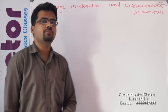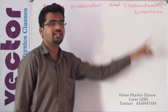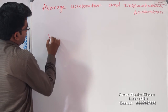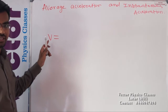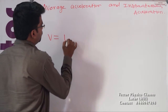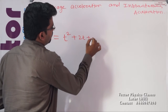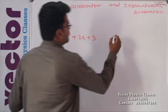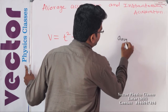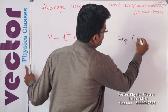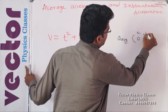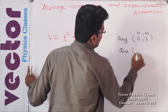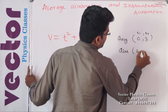Now we will do some questions based on average acceleration and instantaneous acceleration. Let us consider the velocity as a function of time: V is equal to t squared plus 2t plus 3. We have to find the average acceleration in the time interval 0 to 3 seconds, and the instantaneous acceleration at t equal to 2 seconds.